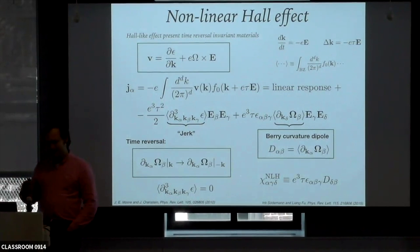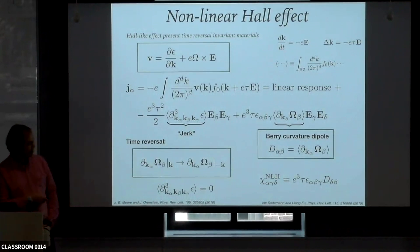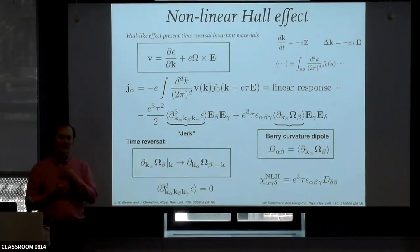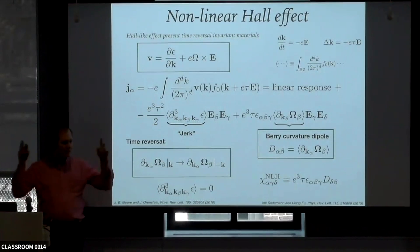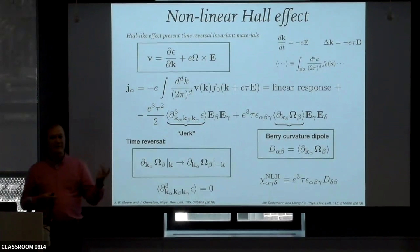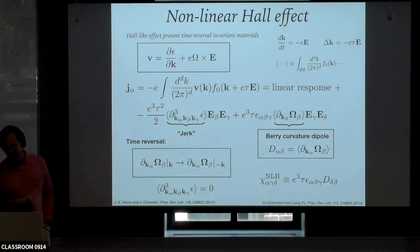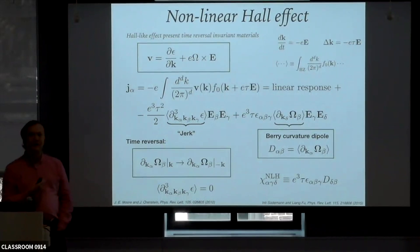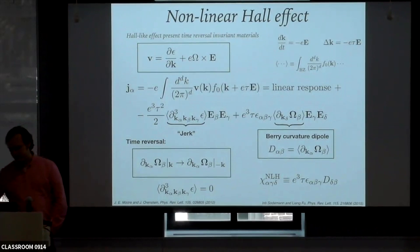A deeper way to conceptualize this is that when you're computing the current, you're seeing basically the terminal velocity of the electron flow. So this calculation of the nonlinear conductivity is contaminated—quote-unquote—from the information of the scattering rate, of the friction that the electrons are experiencing. A better way to think of it is that the Berry curvature dipole is a type of nonlinear Drude weight, something that measures an acceleration.